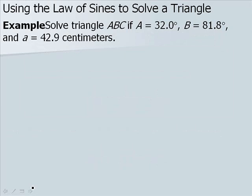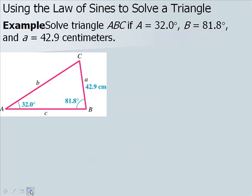So let's do an example. We want to solve triangle ABC if A equals 32 degrees, B equals 81.8 degrees, and side a is 42.9 centimeters. Here we have our triangle.